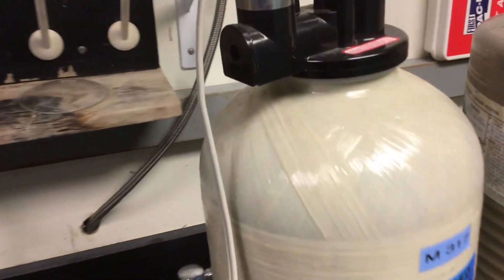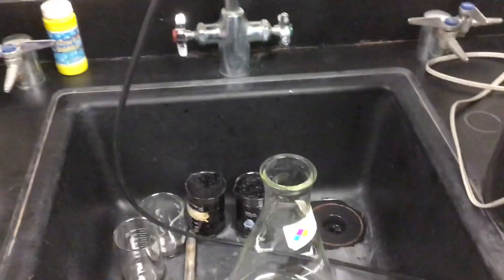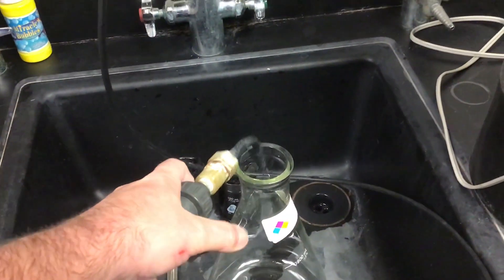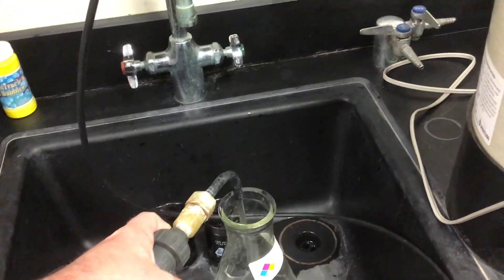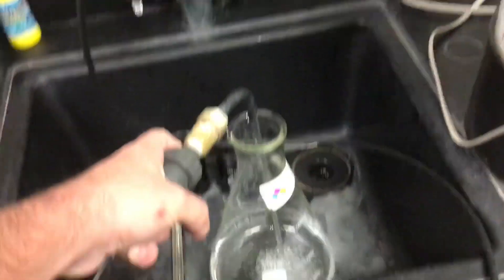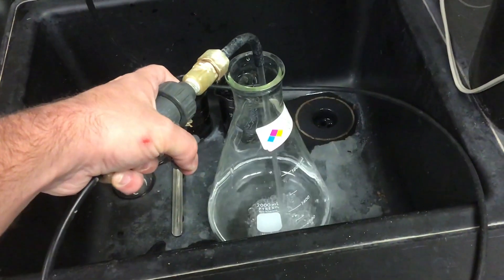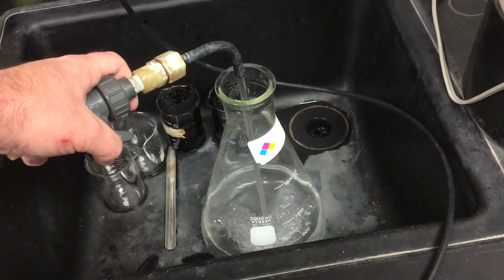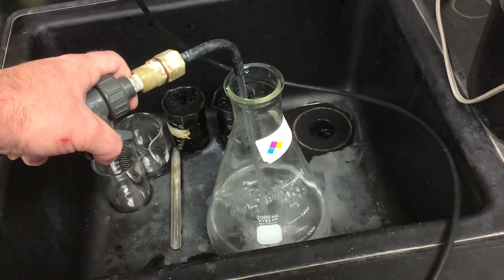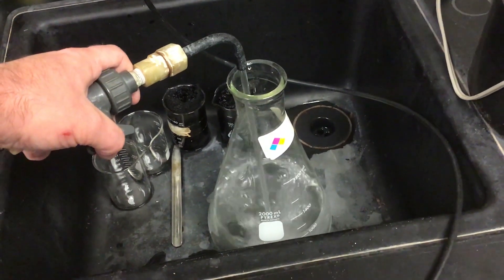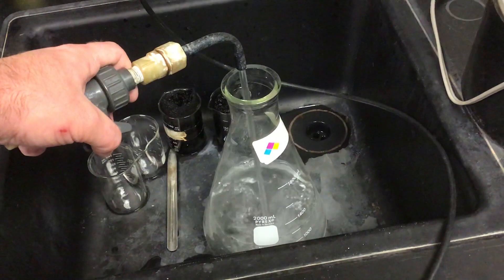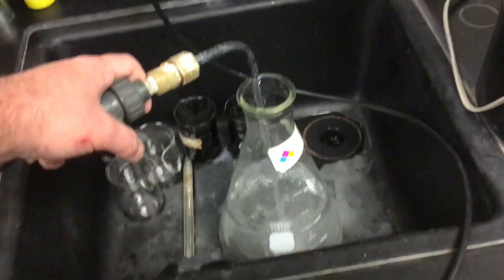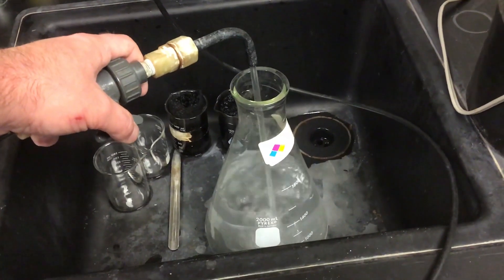We're going to do a controlled experiment. To do that, we need to make sure that our water is pure, so I'm filling up an Erlenmeyer flask with deionized water—that's about as pure as you can get with a reasonable price tag. I'm just going to fill it up all the way, and then we're going to test and see what happens when we put deionized water across those probes.